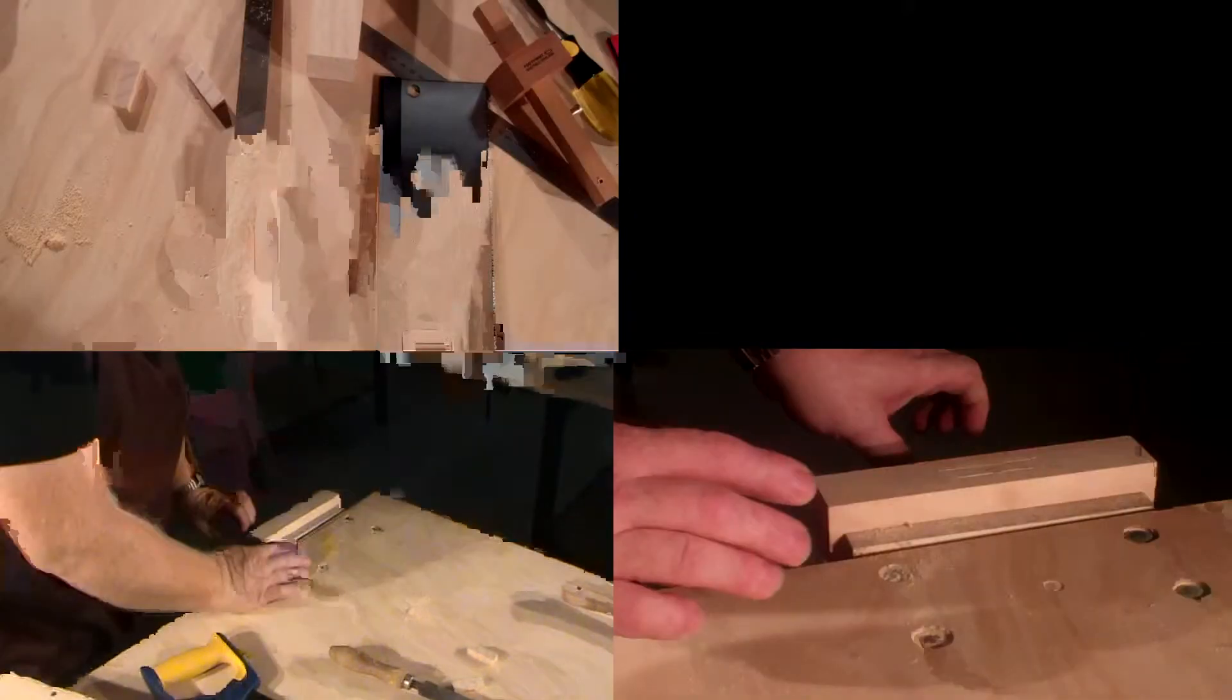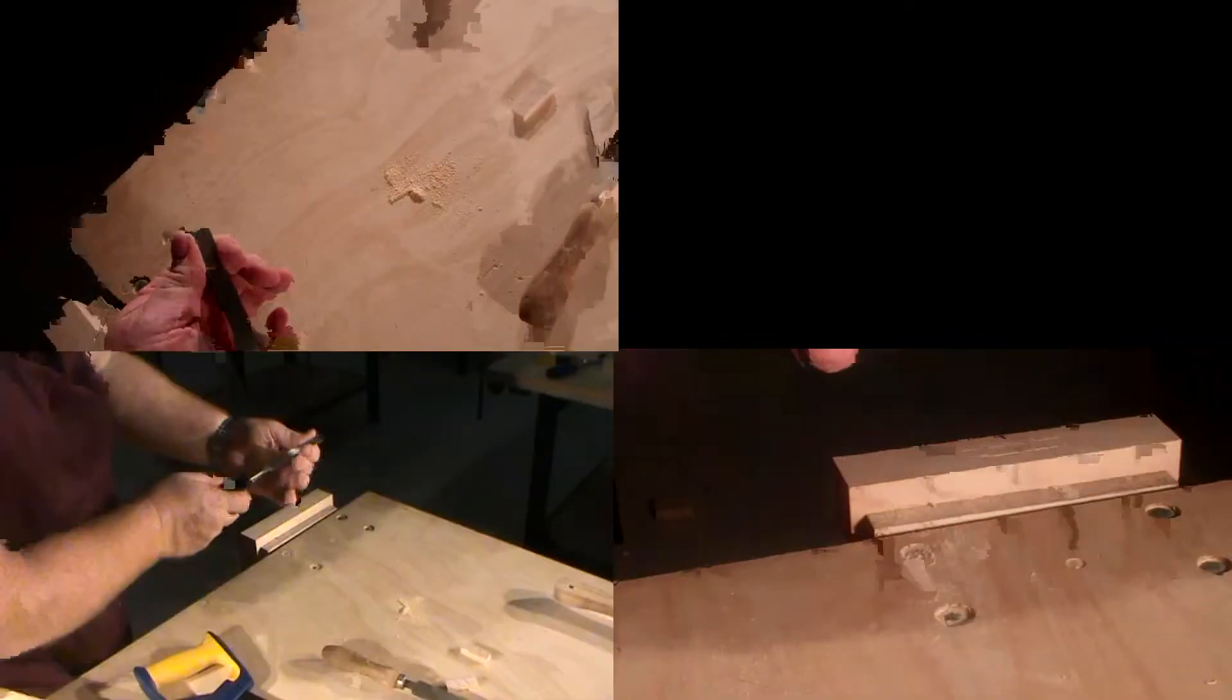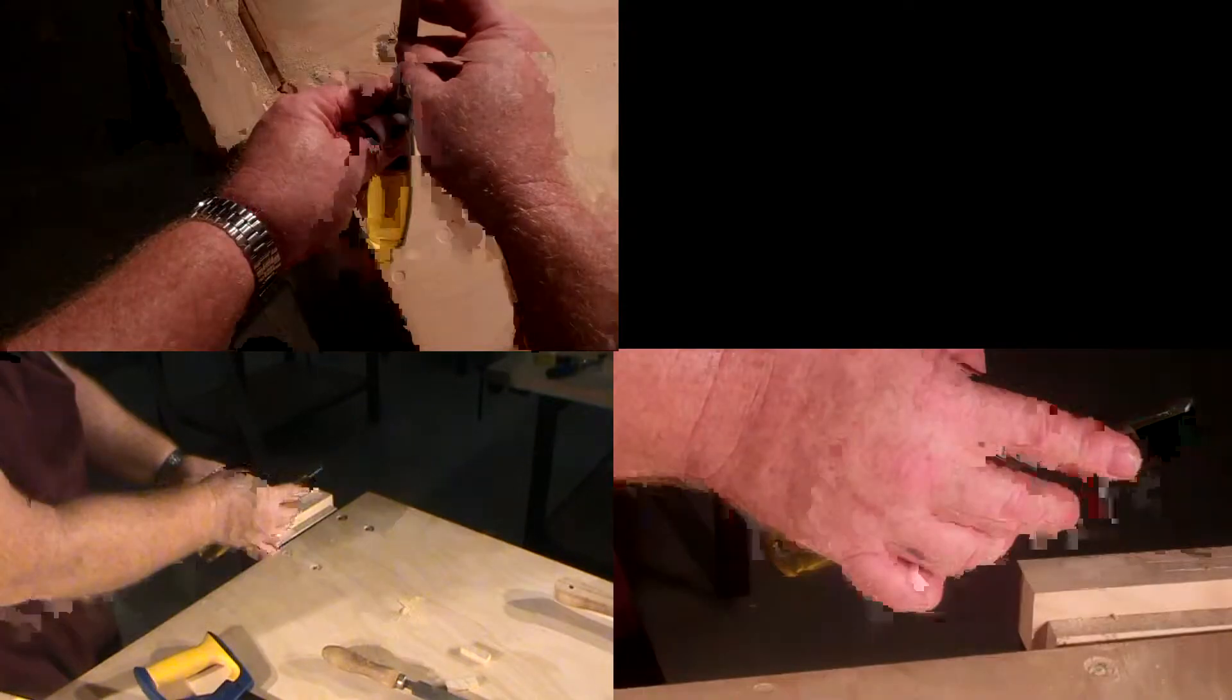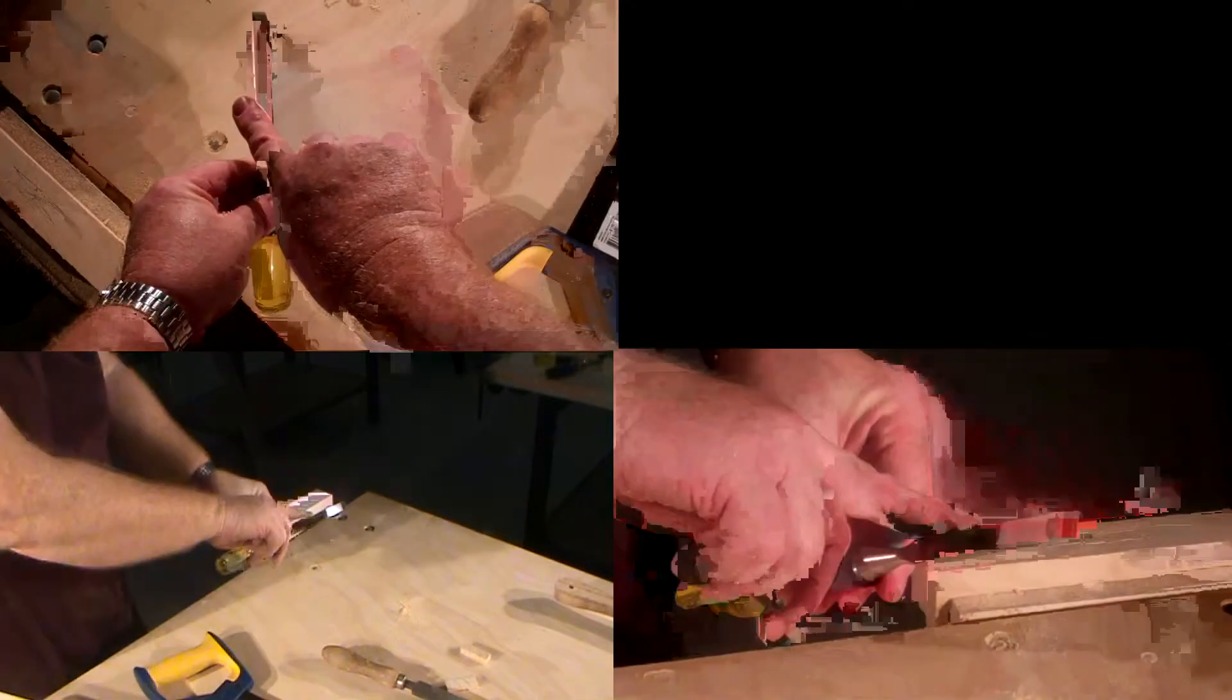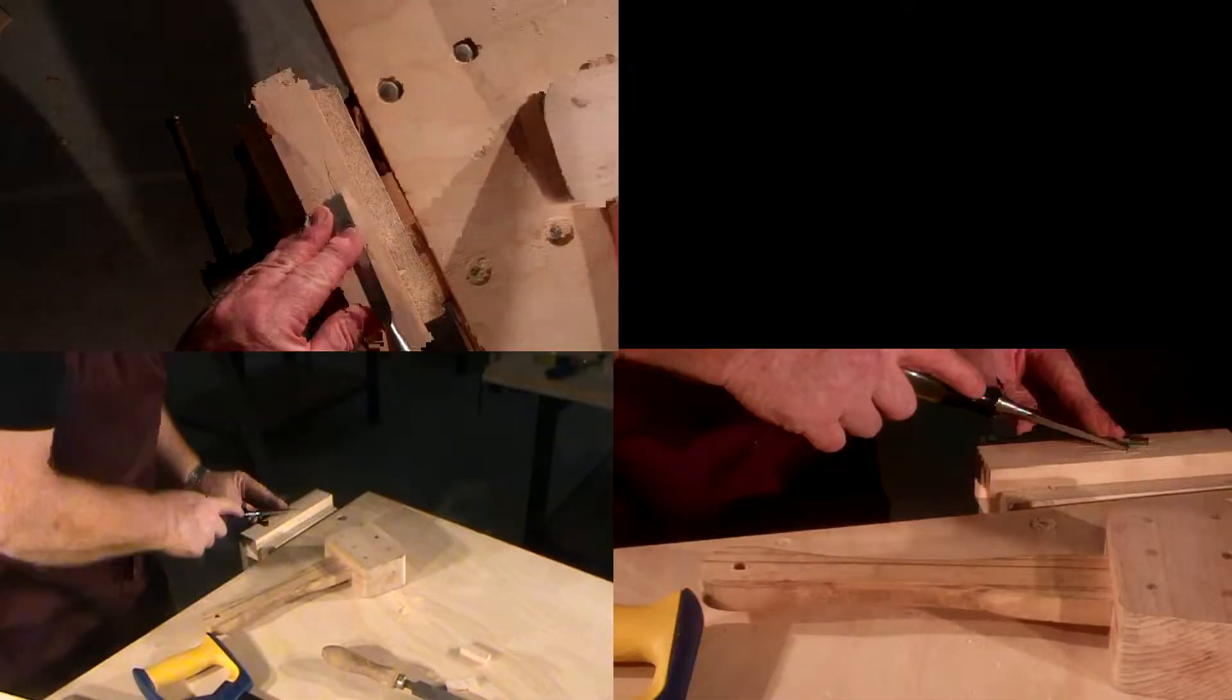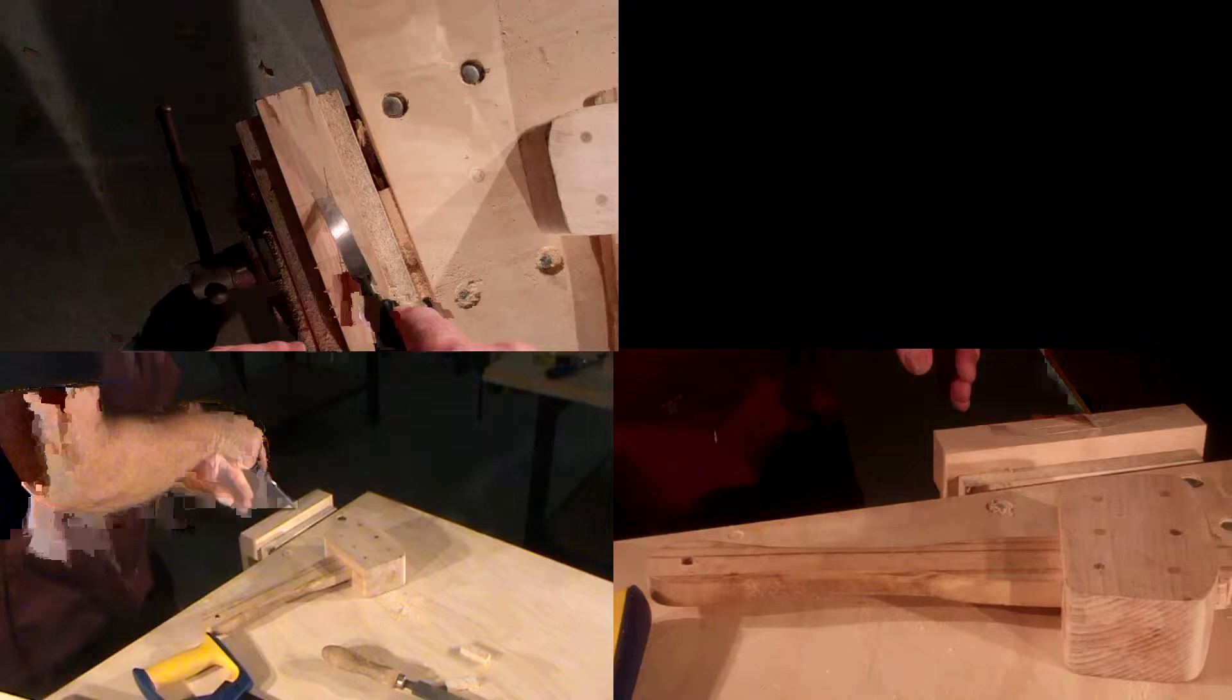It's important to use the correct chisel when you're doing this joint. This is a mortising chisel - you can see that it has square edges as opposed to the beveled edge. We'll start off using the mallet, put your chisel right on the end point and mark it over.